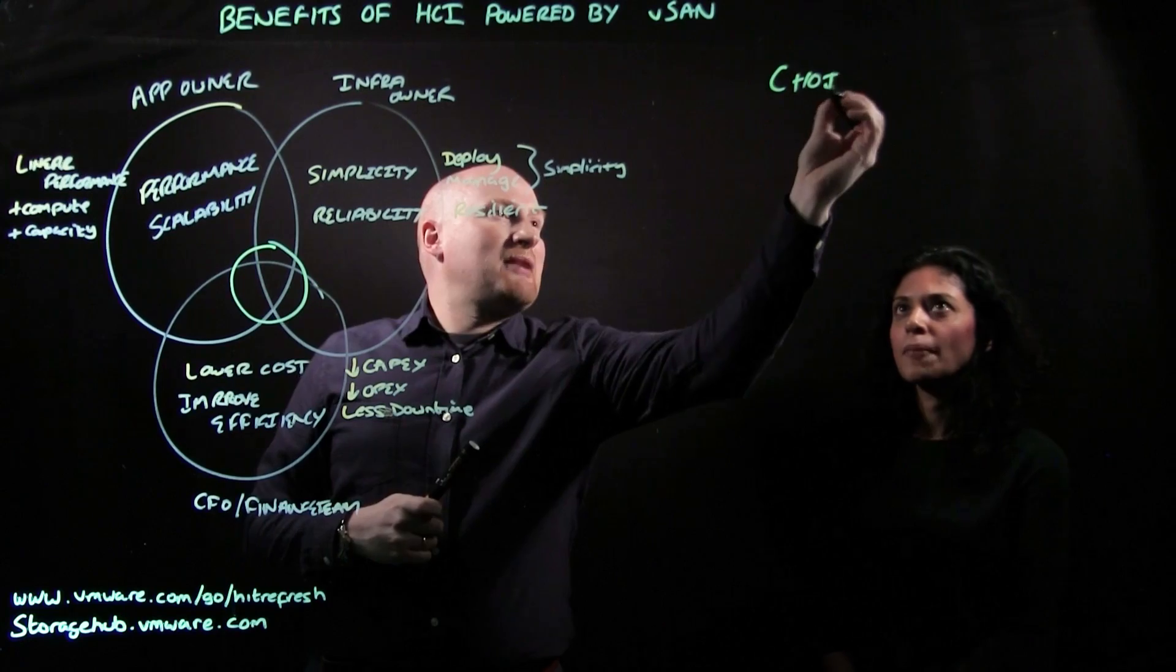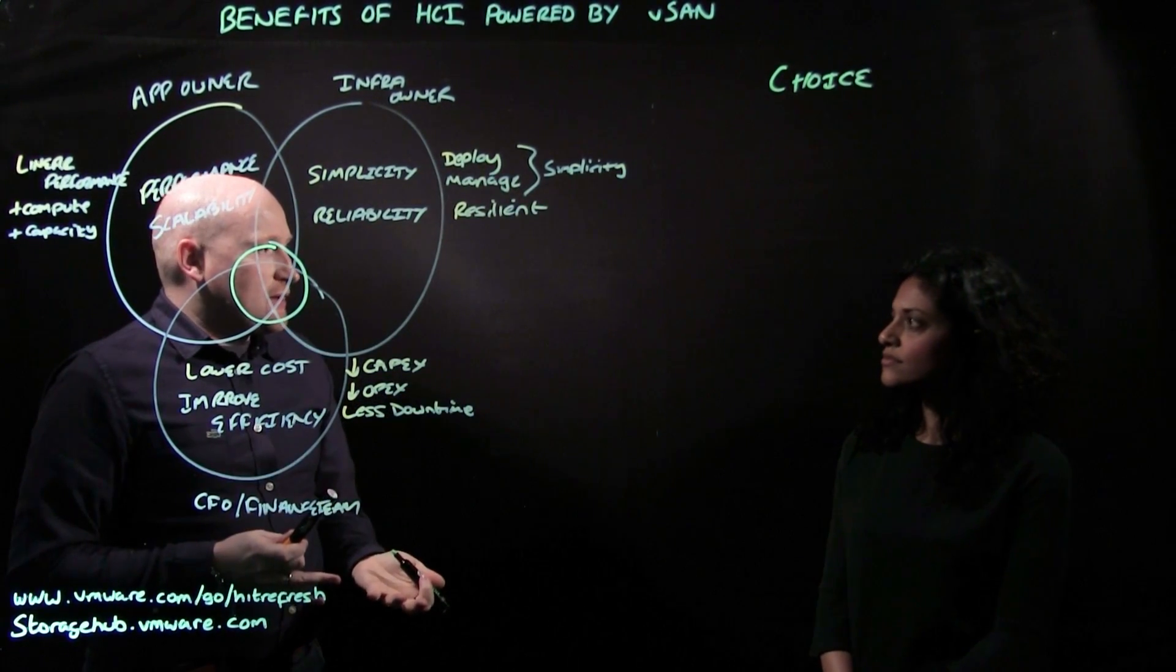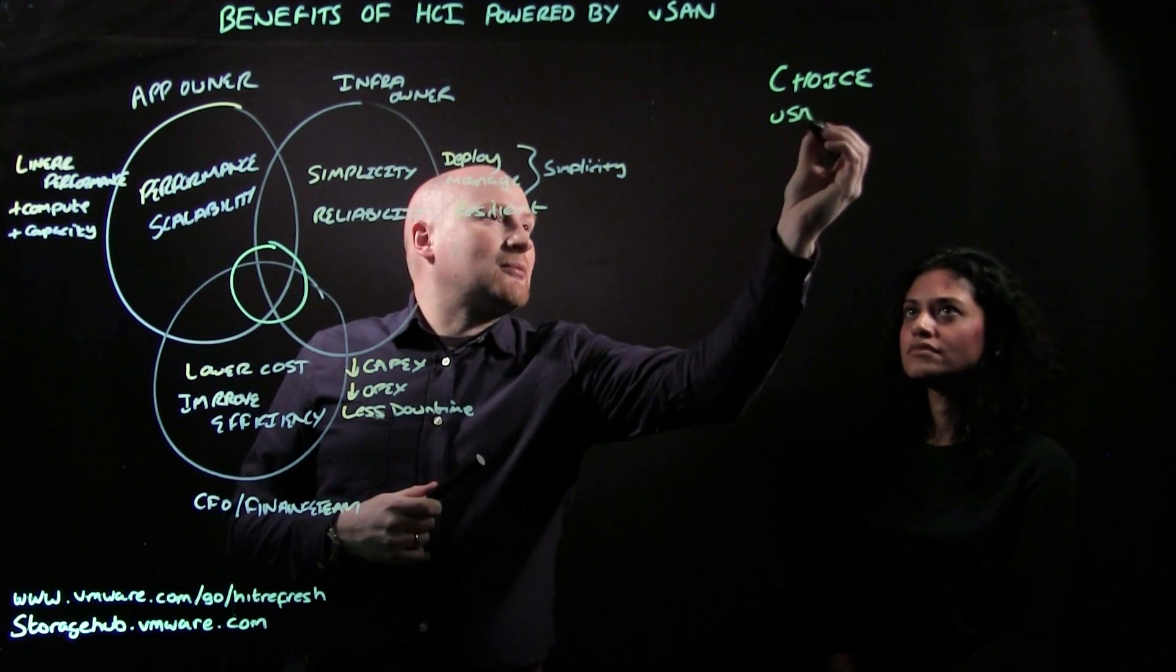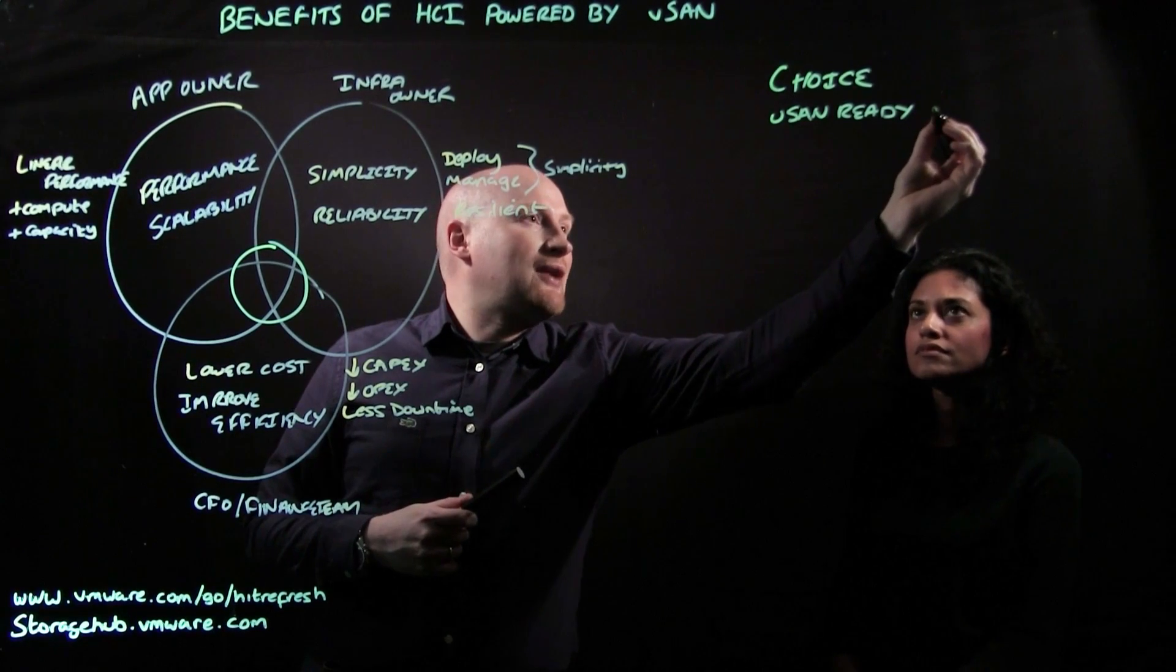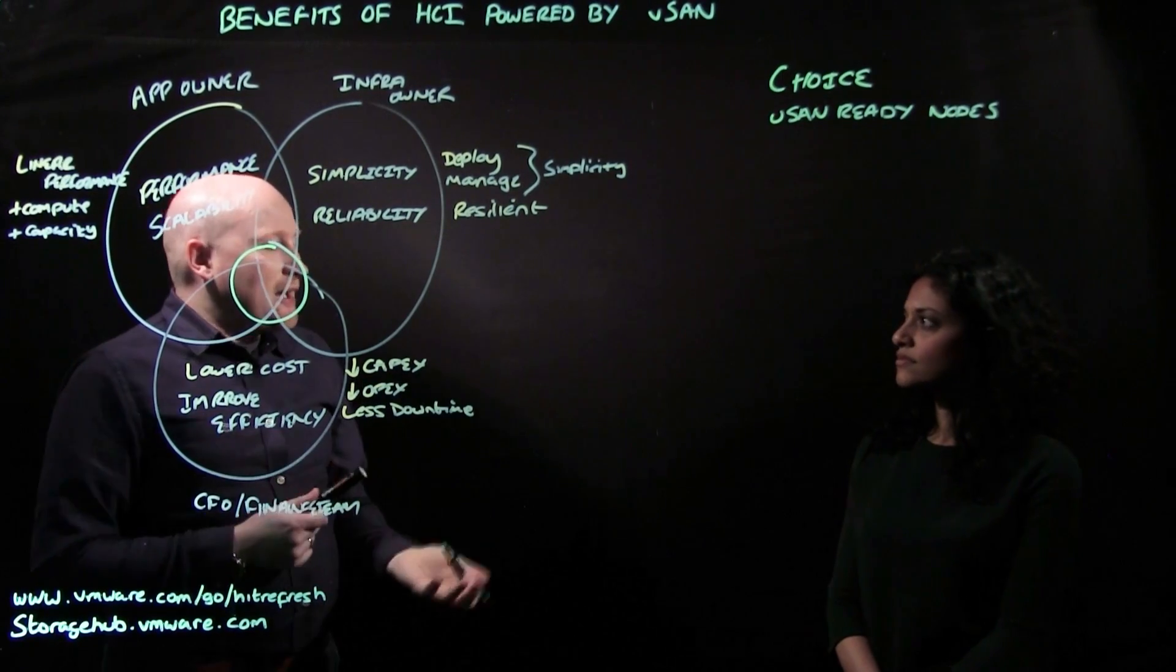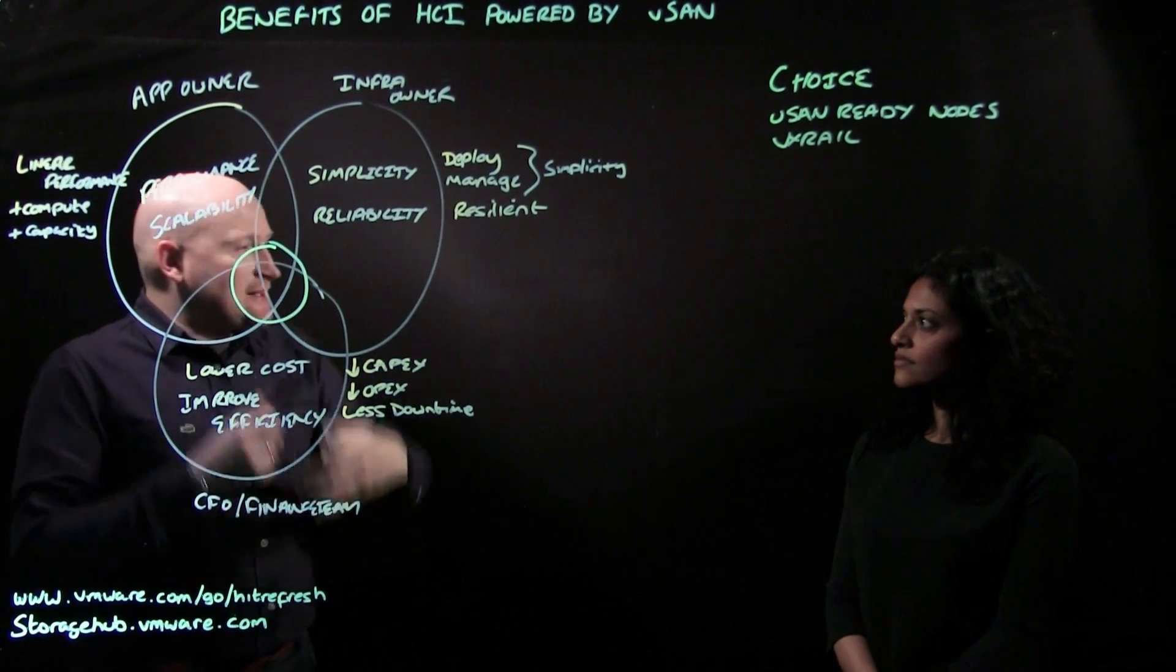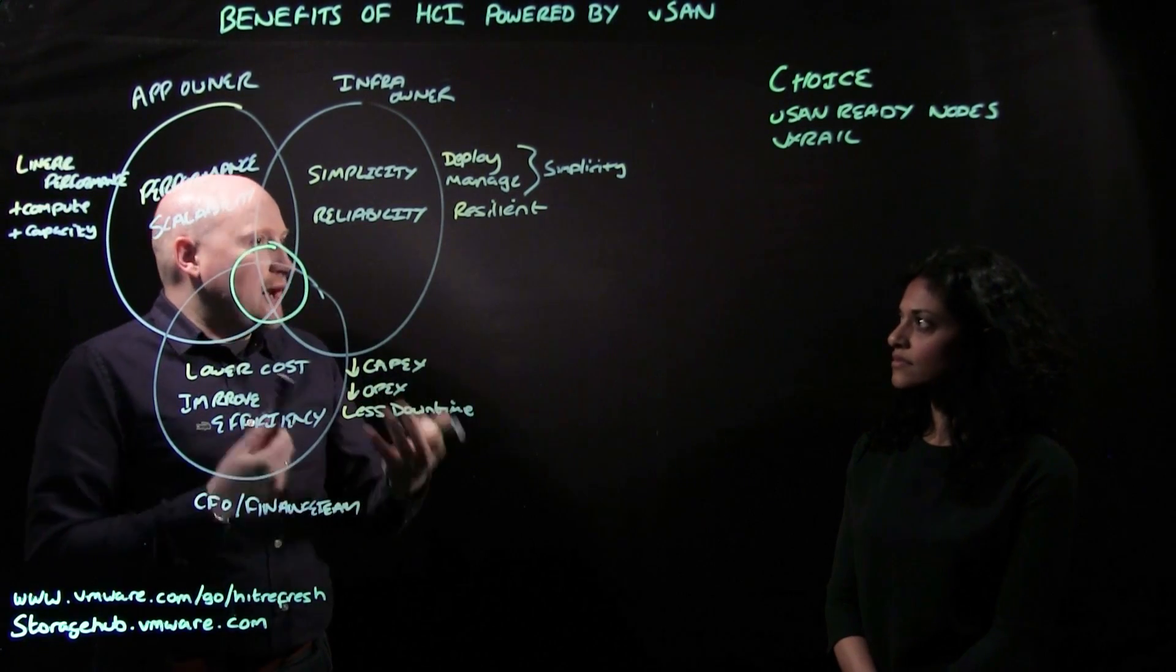So what I mean by choice is you've got different hardware options. Firstly, vSAN has vSAN ready nodes from all the major OEM server vendors, so that allows customers to adopt vSAN with predefined configurations that have been certified by the vendors. There's also turnkey appliance solutions like VxRail from Dell EMC, and that offers a little bit more of a simplistic approach of guided deployments as well as full life cycle management and things like that.